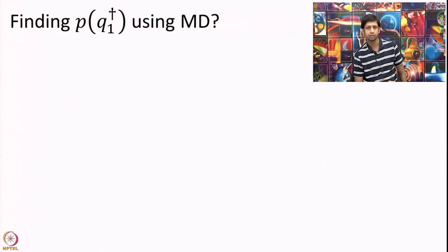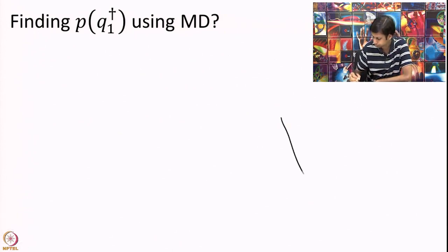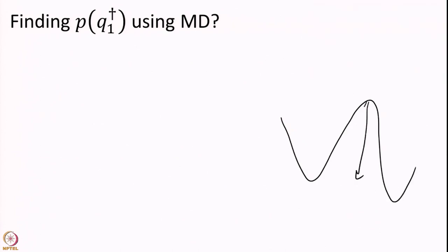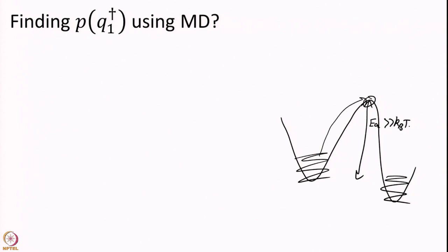However, we have another problem. If the barrier height is much larger than kT, running an MD simulation means the time spent near the transition state is extremely small. Most of the time you will be exploring the reactant or product regions, and only very rarely will you explore the transition state region. If I run a 1 nanosecond simulation, you might spend only 1 femtosecond there — so it is not very efficient. We have not achieved much so far and need a clever way to fix this.